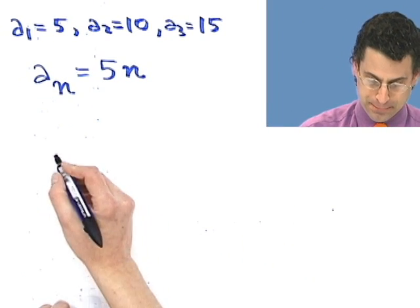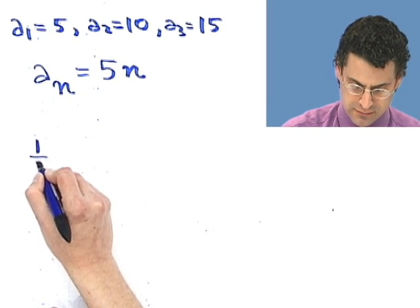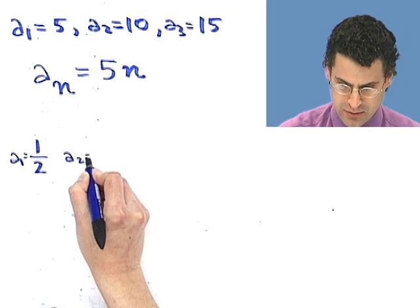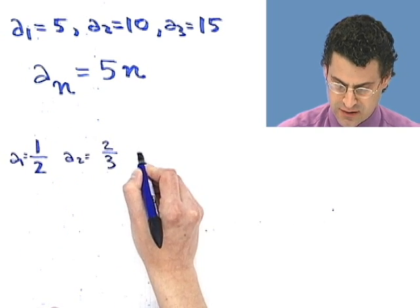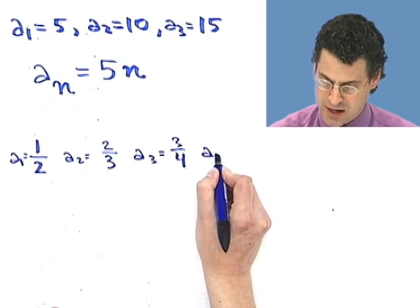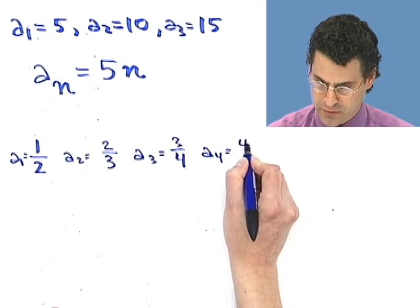How about this one here? Here, 1 half is the first term, so that's a1. a2 equals 2 thirds. a3 equals 3 fourths. a4 equals 4 fifths.